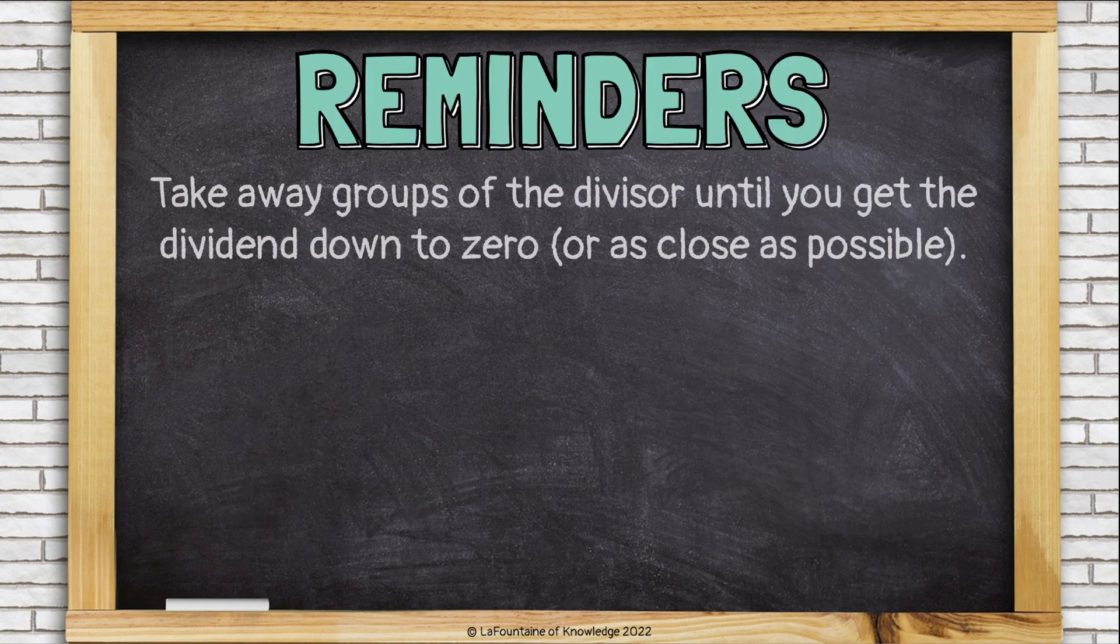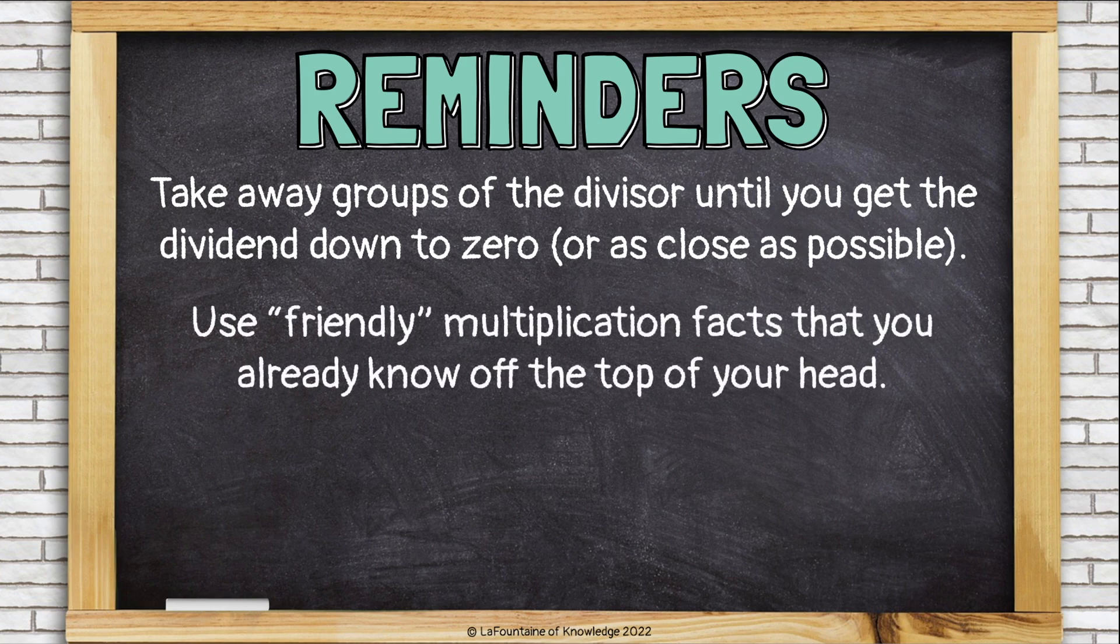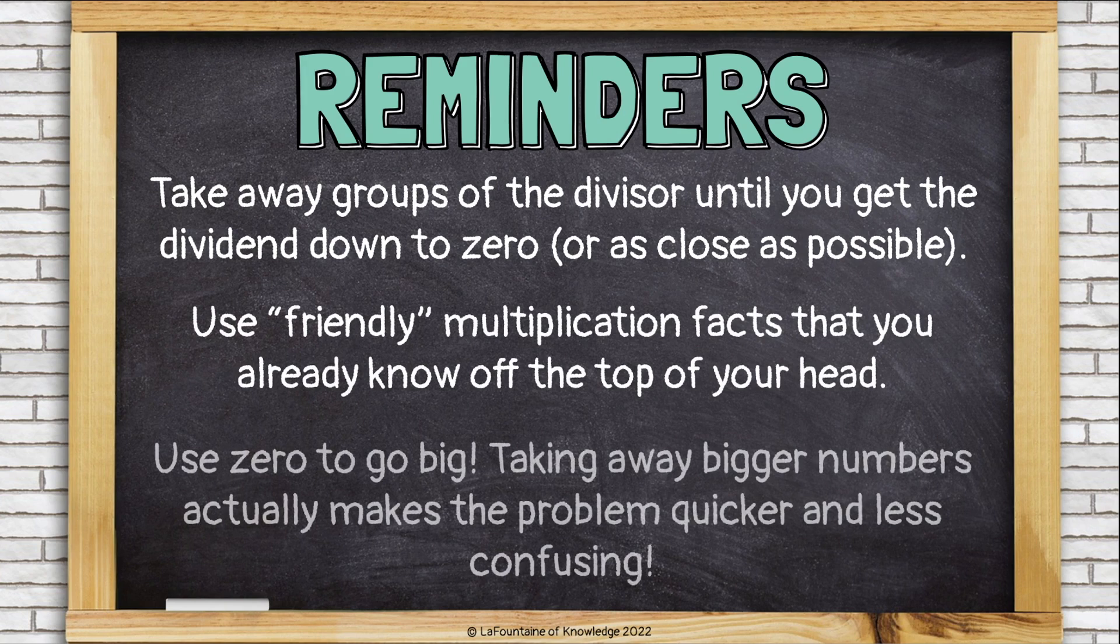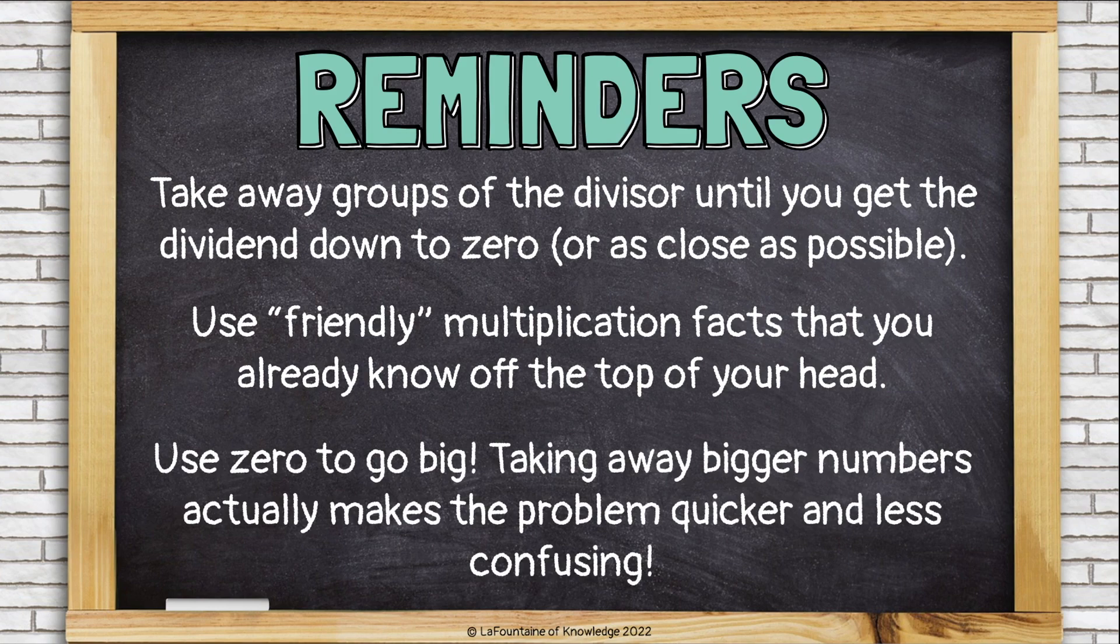Let's review. Take away groups of the divisor until you get the dividend down to 0, or as close as possible to 0. Use friendly multiplication facts that you already know off the top of your head. Use 0 to go big. Taking away bigger numbers actually makes the problem quicker and less confusing.